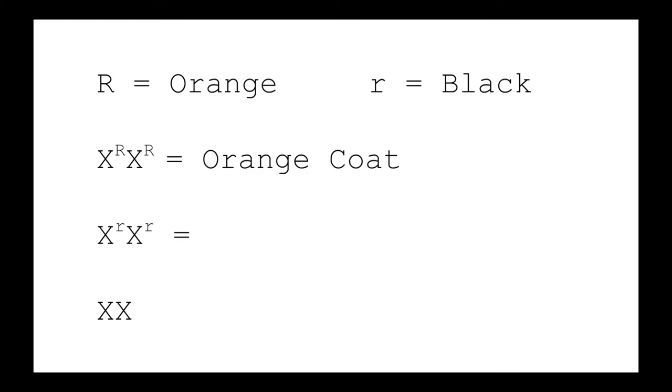Let's use a capital R to represent the orange allele and a lowercase r to represent the black allele. For females, there are three possible genotypes. Big R, big R would lead to an orange coat. Little r, little r would lead to a black coat. And big R, little r would lead to a mixture of both black and orange.